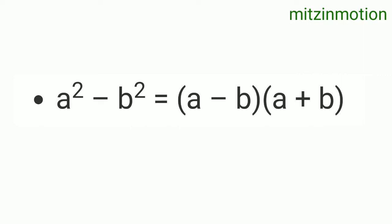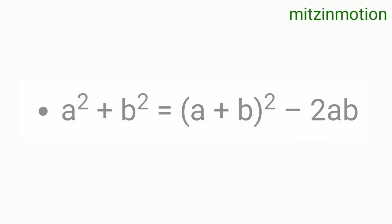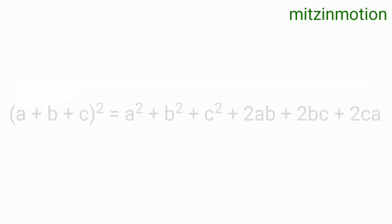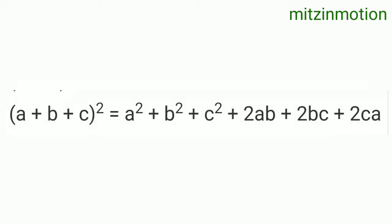The next formula is a² + b², which is equal to (a + b)² - 2ab. The next is (a + b + c)² = a² + b²...